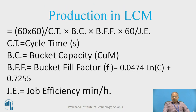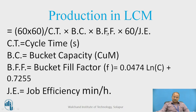Production in loose cubic meters can be calculated using the formula: (60 × 60 ÷ cycle time) × bucket capacity × bucket fill factor × (60 ÷ job efficiency).